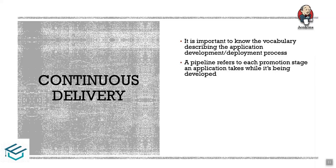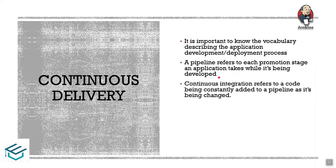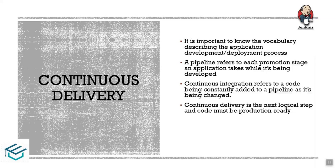If you need testing access, testing is done first. When the code is production-ready, continuous integration is where code changes go into the pipeline. Continuous delivery is the next logical step — the code must be production-ready. After continuous integration, tests must pass, and then the next logical step is making the code production-ready with acceptance testing.